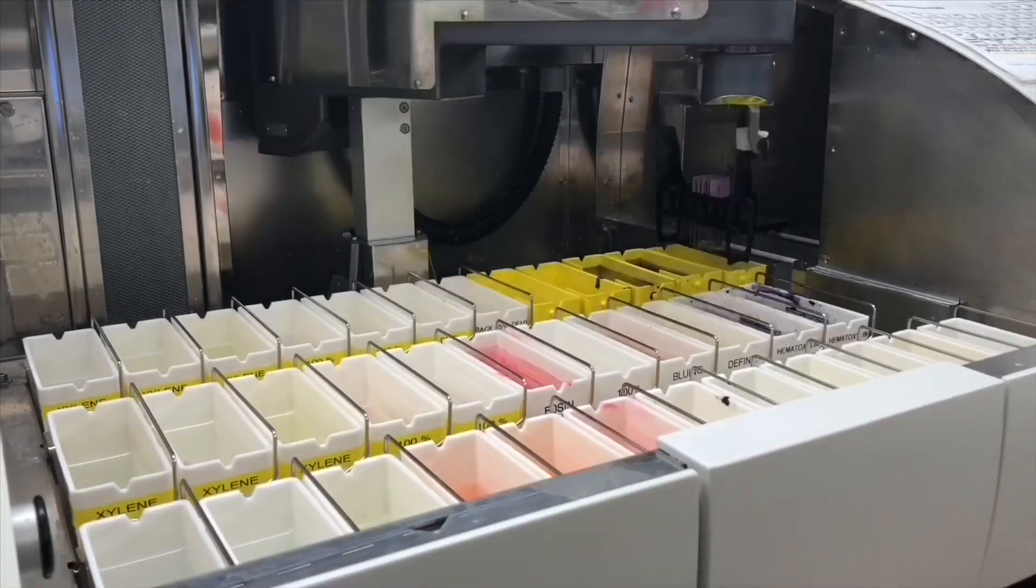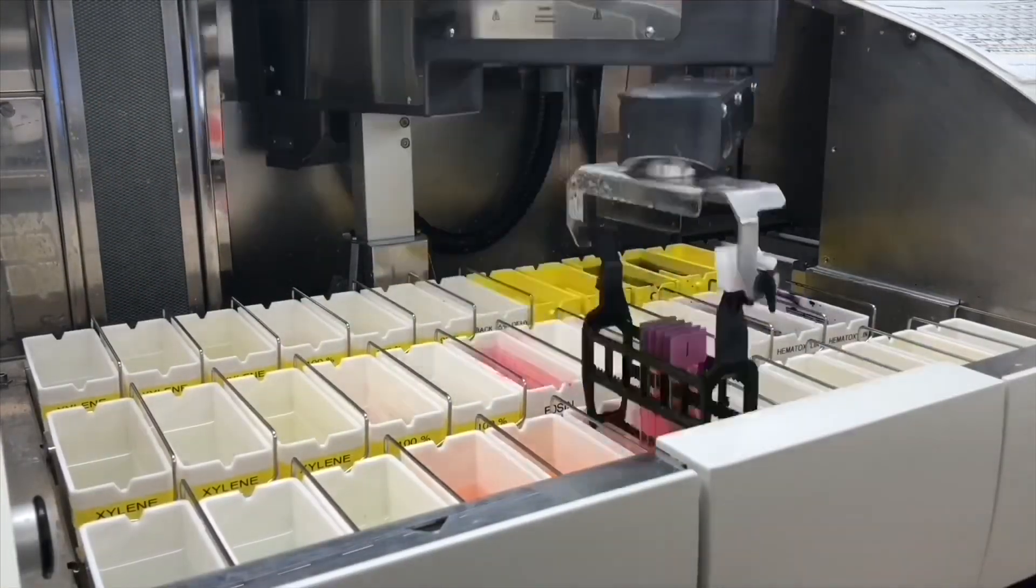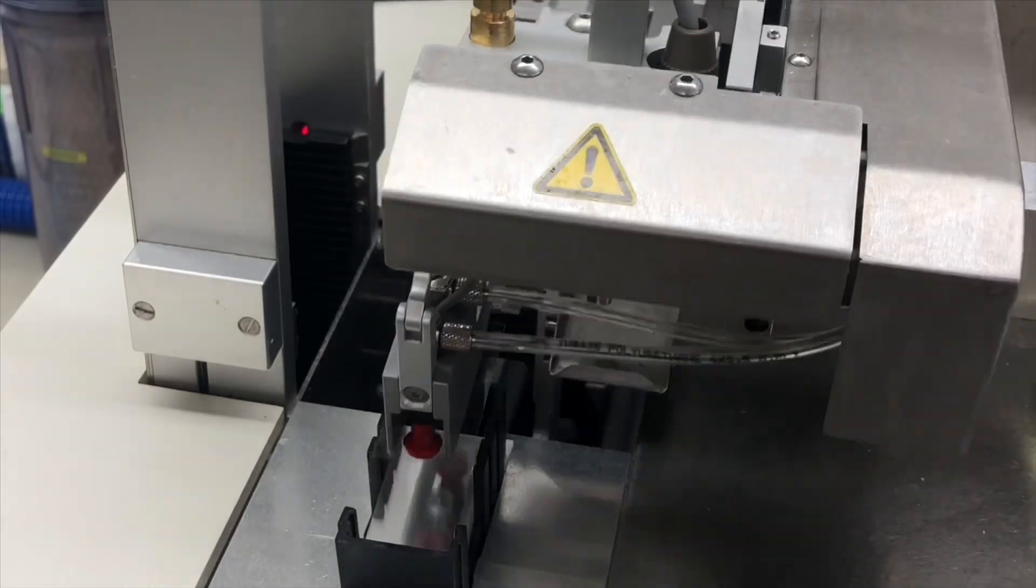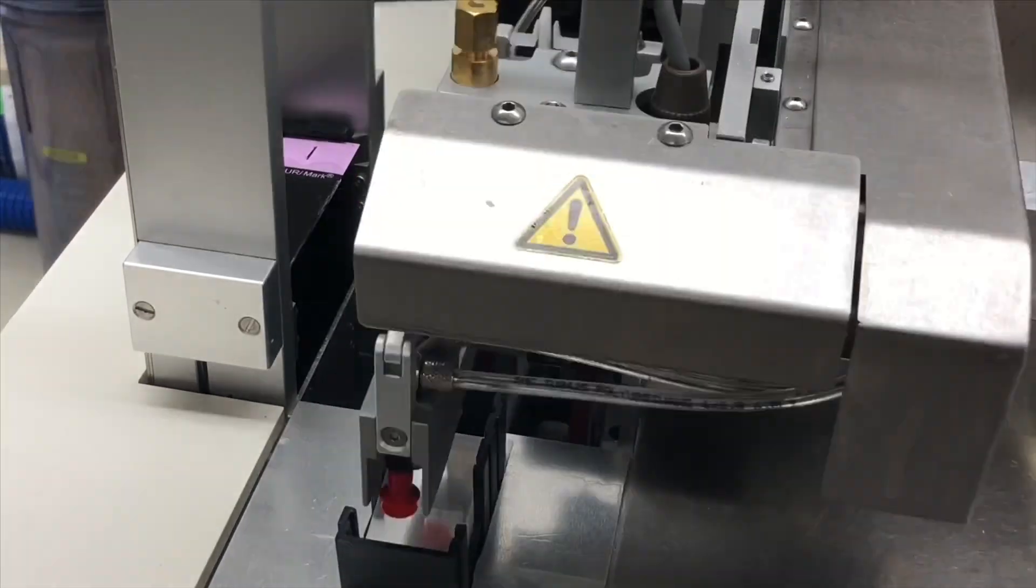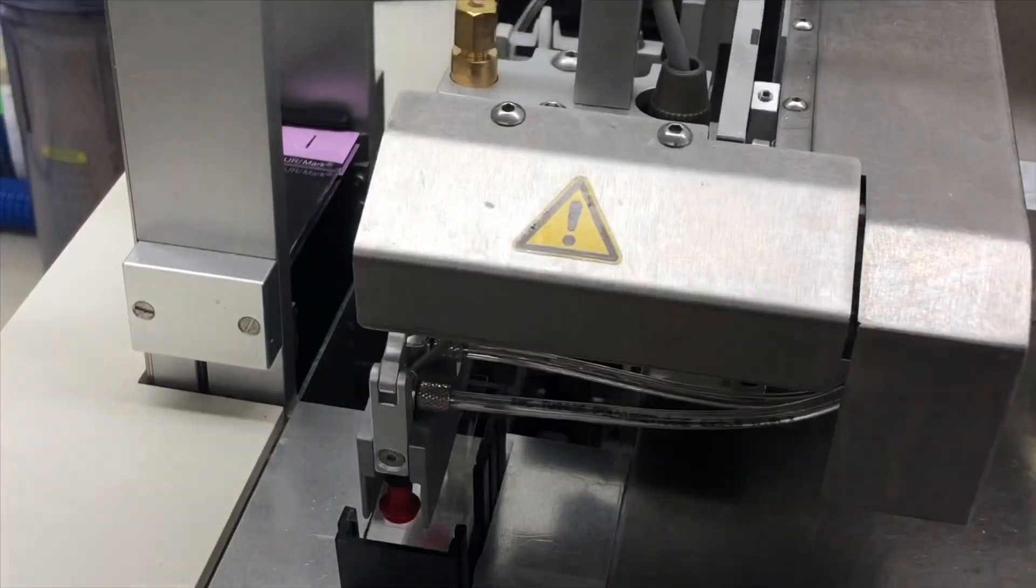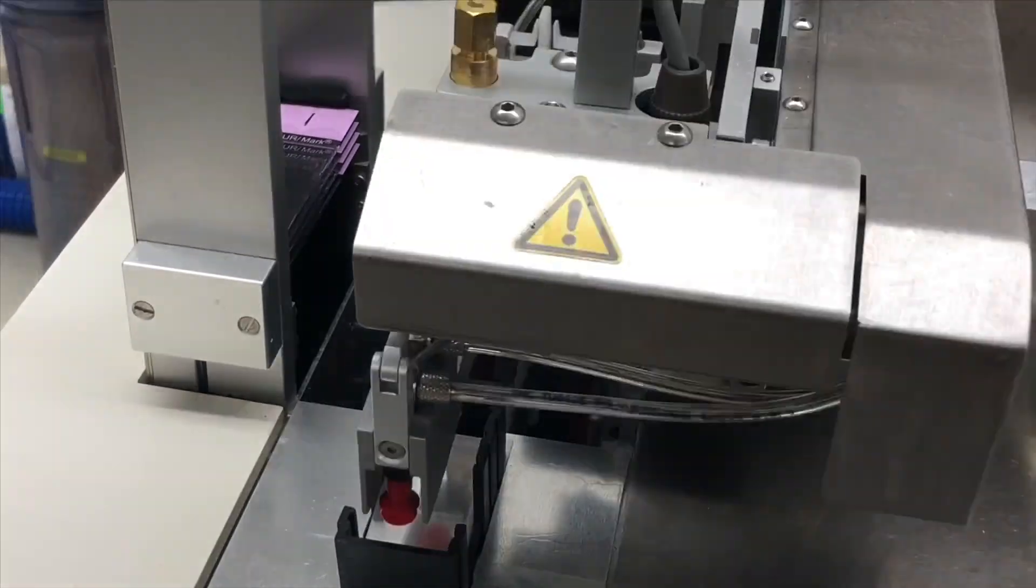The slides are placed in batches of 30 onto our automatic stainer for our H&E stain, hematoxylin and eosin. Once the stain is complete, the slides are coverslipped. Coverslipping under a clear piece of glass allows the pathologist to see the tissue under the microscope.